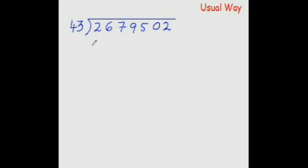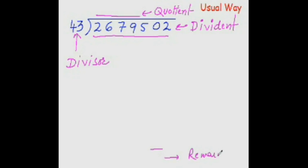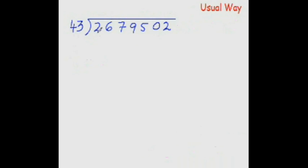The entire number being divided is known as the dividend, and the number dividing it is known as the divisor. We write our answer in a separate space, and that answer is known in technical terms as the quotient. If there is any digit left at the end, that would be the remainder. Now let's start dividing these numbers.